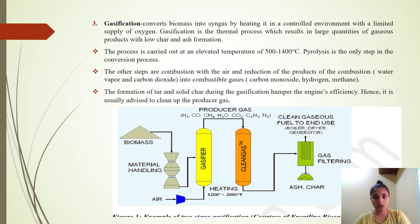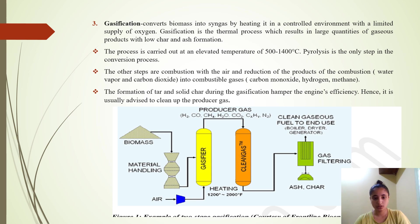Gasification converts biomass into syngas by heating it in a controlled environment with a limited supply of oxygen. It is a thermal process which results in large quantities of gaseous products with low char and ash formation. The process is carried out at an elevated temperature of 500 to 1400 degrees Celsius. The steps include pyrolysis, combustion with air, and reduction of combustion products into combustible gases — carbon monoxide, hydrogen, and methane. The formation of tar during gasification hampers engine efficiency; hence, it is usually advised to clean up the producer gas.